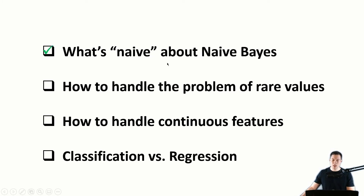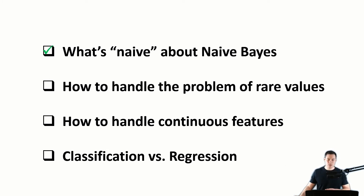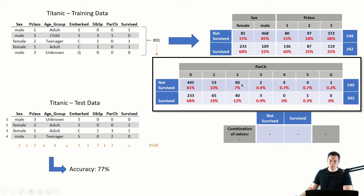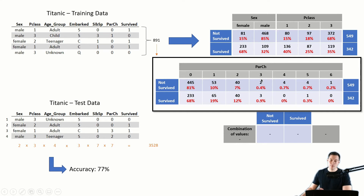Now let's get to the second point: how to handle the problem of rare values. There are two ways in which rare values can cause problems. For the first one, let's look at the feature parents and children. The majority of passengers traveled with zero, one, or two children, and everything above that doesn't happen very often. For example, value three has in total just five passengers who traveled with three parents or children — that's an example of a rare value. However, with this value there's actually no problem since there are just low percentages.